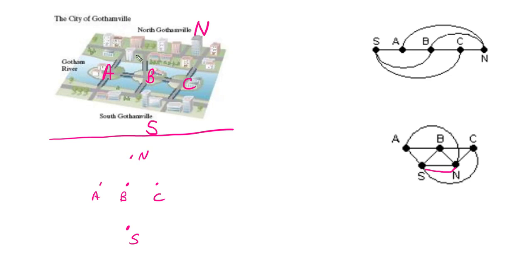And then all I'm doing is looking and seeing, okay, N connects to A by that bridge, N connects to B, I missed the bridge, by that bridge, N connects to C by that bridge.